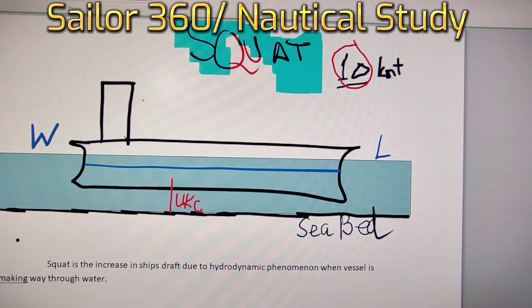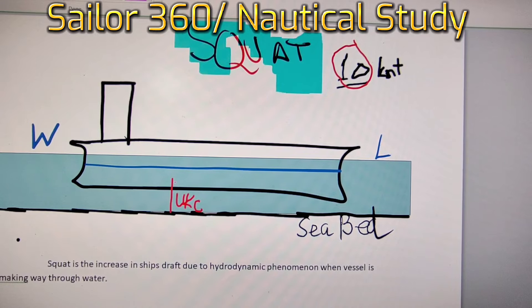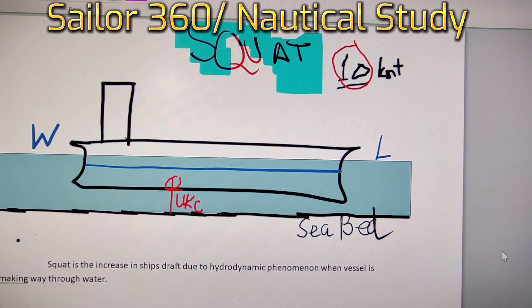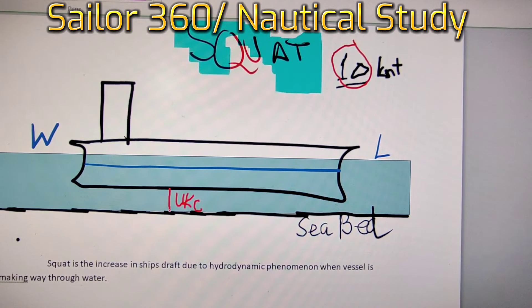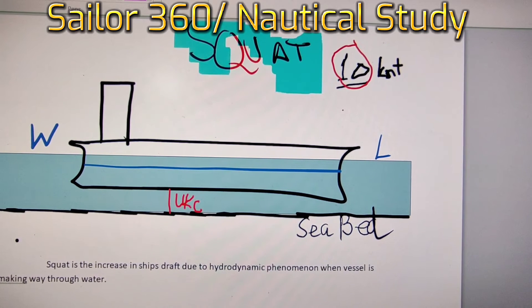Now we can see the difference. The same vessel with 10 knot speed - the UKC has become reduced up to this. So this much UKC has become reduced. Now the present UKC is this much only. So the effect we can easily determine - the UKC is reducing and draft is increasing.